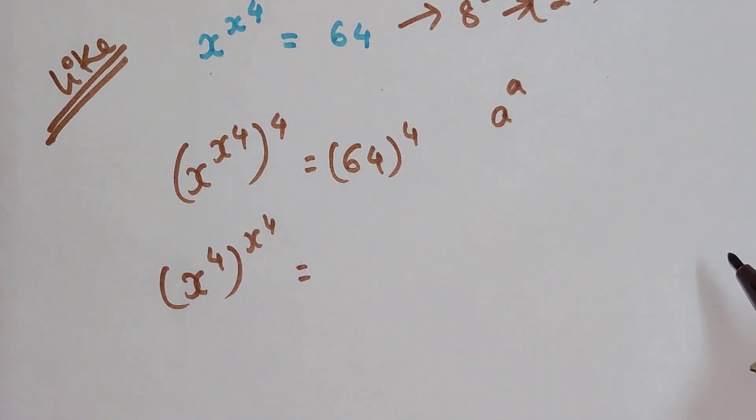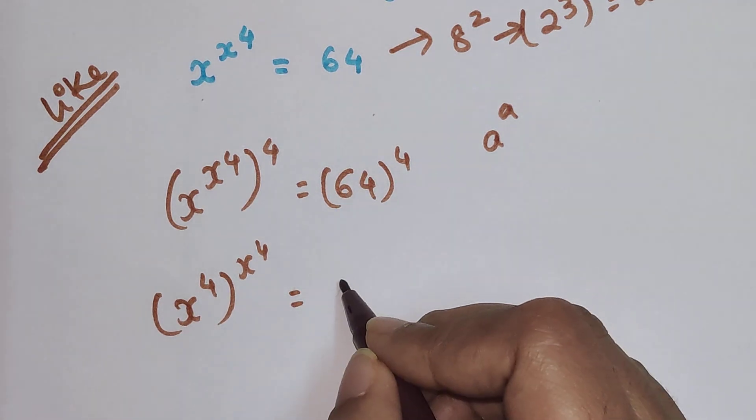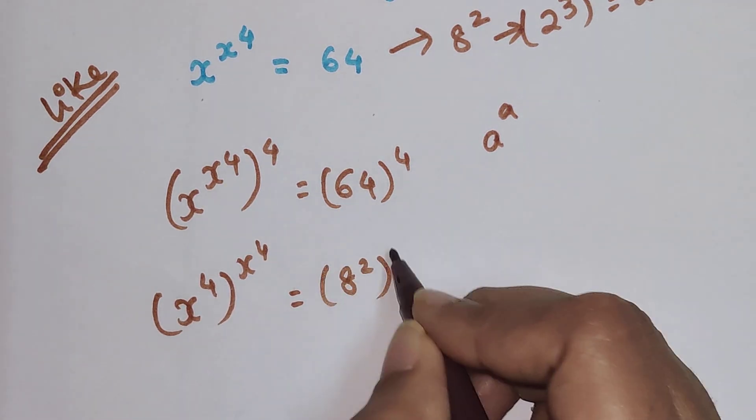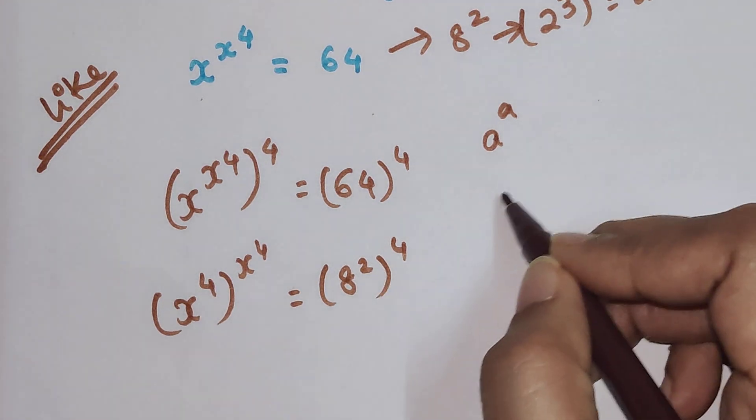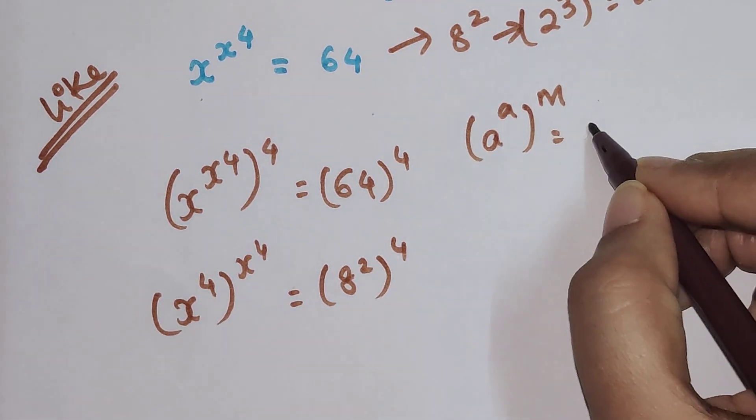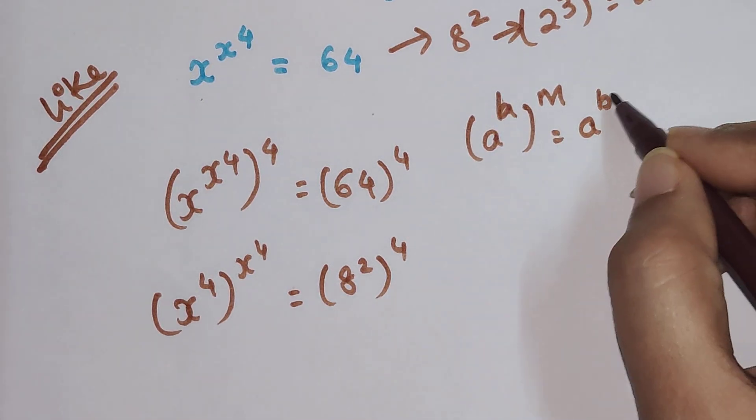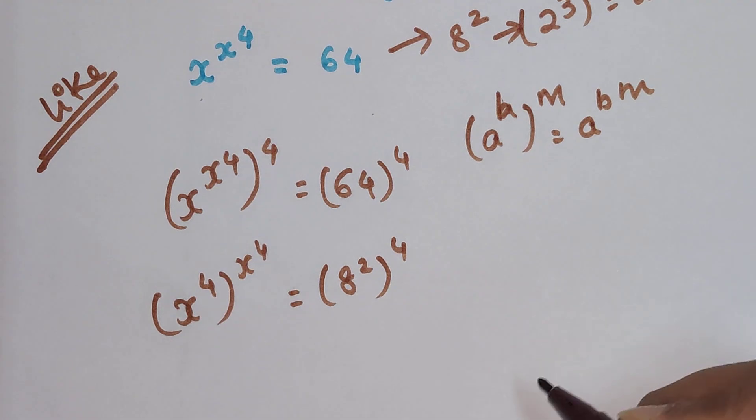So now we have 64 which is 8^2, the whole raised to 4. Here we have (a^b)^m. This can be written as a^(b×m). So this becomes 8^(2×4) = 8^8.